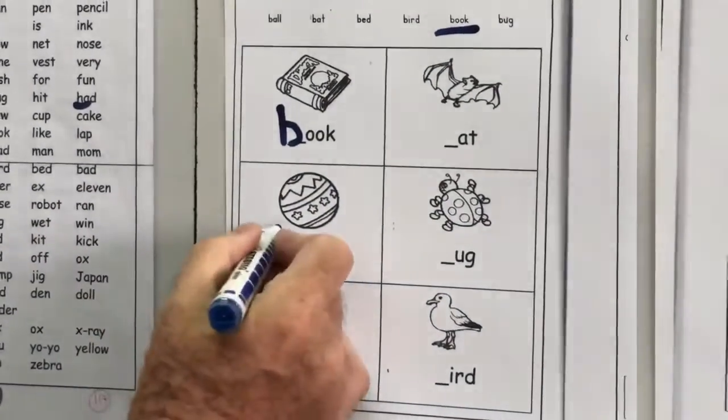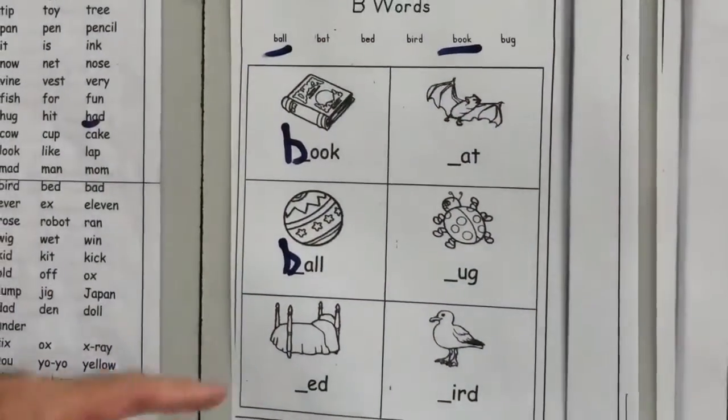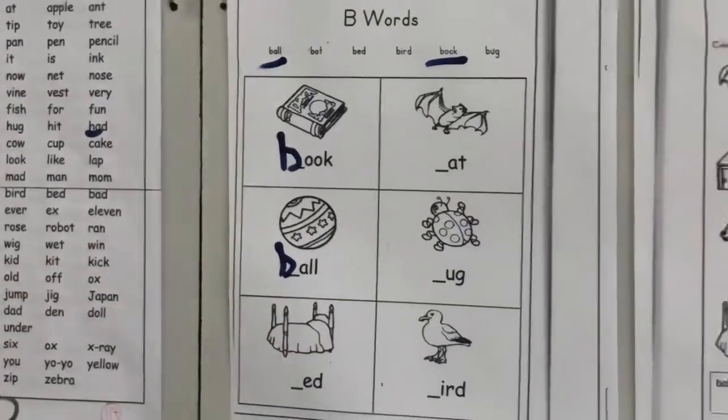And this one, B, for ball. Where's book? There it is there. OK, so put in the B.